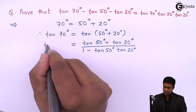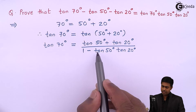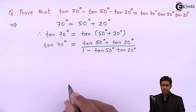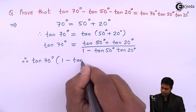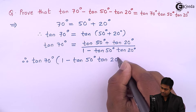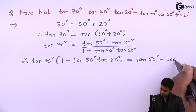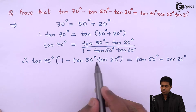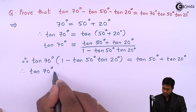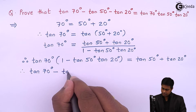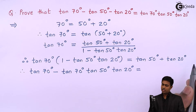We have tan 70° on the left. Taking the denominator to the other side by cross-multiplication gives: tan 70° × (1 − tan 50° · tan 20°) = tan 50° + tan 20°. Expanding the bracket: tan 70° − tan 70° · tan 50° · tan 20° = tan 50° + tan 20°.